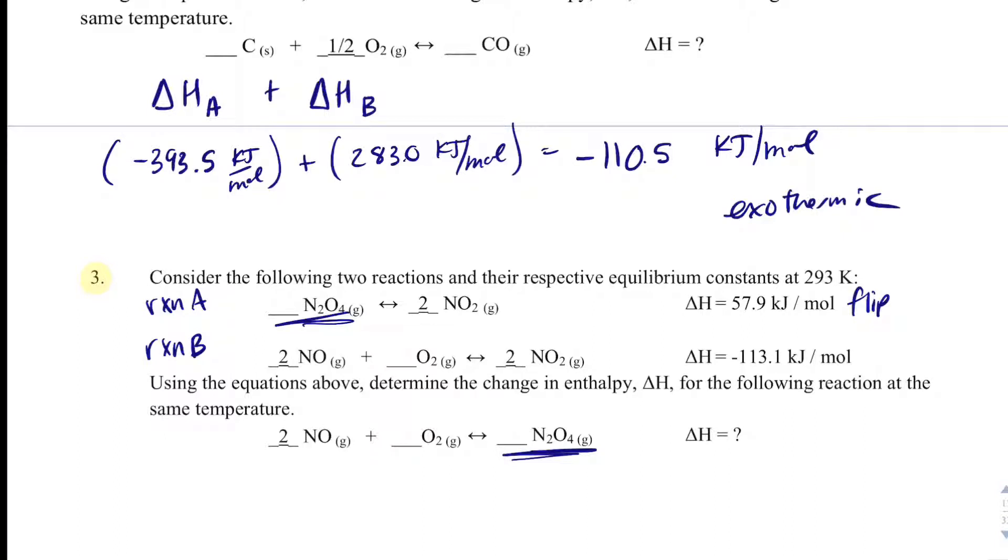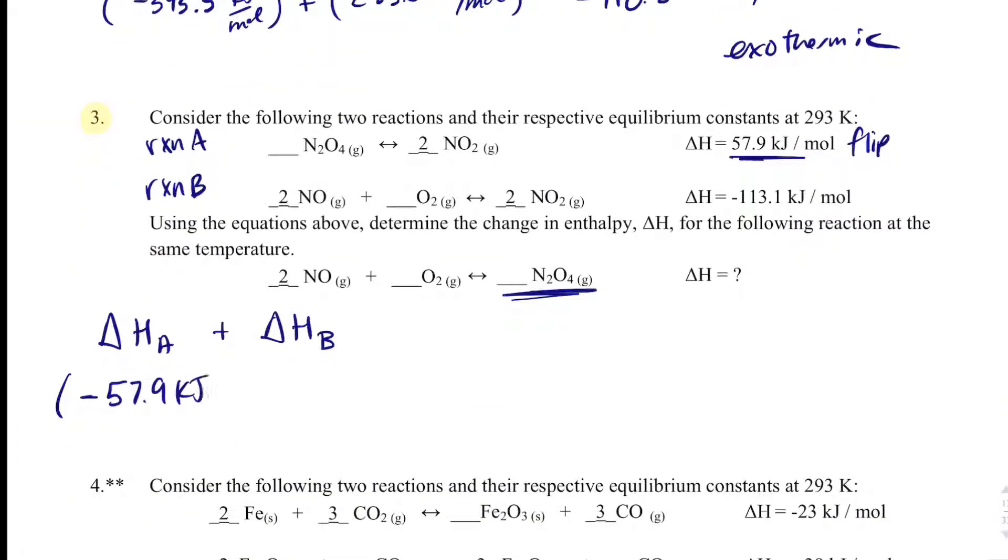Because I'm going to flip that, the nitrogen dioxides would cancel because they'd be on opposite sides of each other. For my overall delta H, I'm going to take delta H of A plus delta H of B. Delta H of A is not 57.9 kilojoules per mole, but it's negative 57.9 kilojoules per mole. Delta H of B does not change, so that's plus negative 113.1 kilojoules per mole. When I add those together, I end up getting negative 171 kilojoules per mole, and that is exothermic.